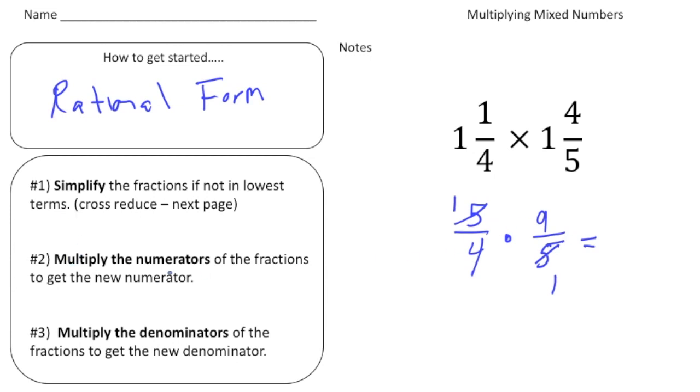So step number two, multiply the numerators. So numerators are 1 and 9. So 1 times 9 is 9. And then multiply the denominators. 4 times 1 is 4.